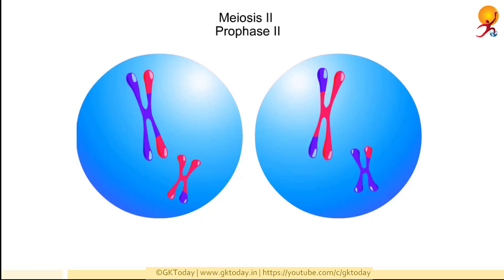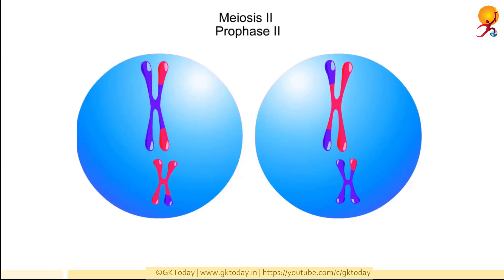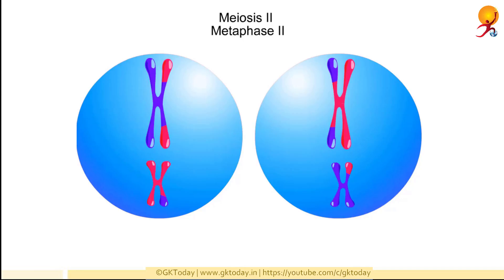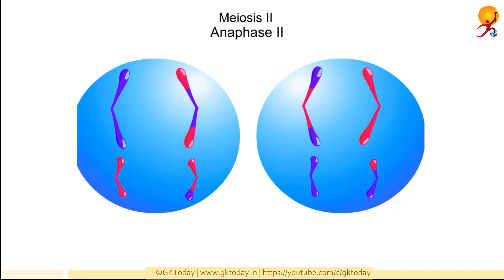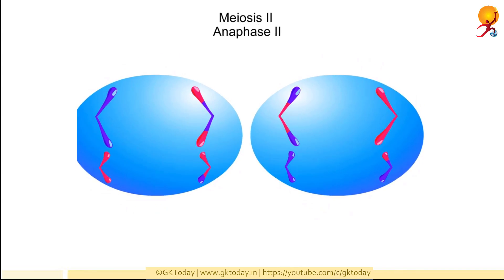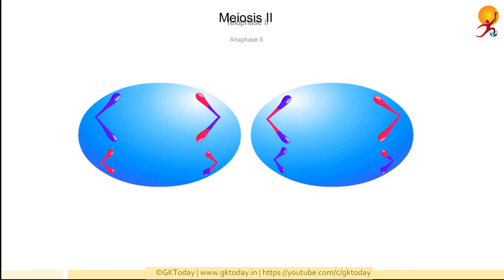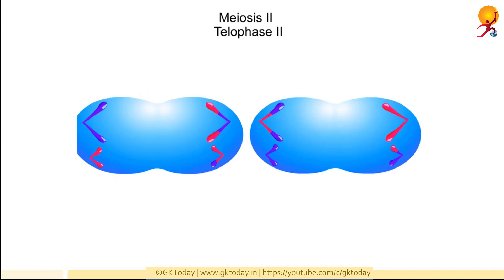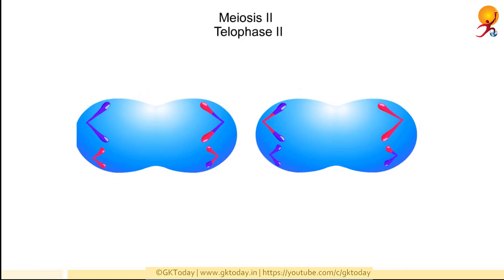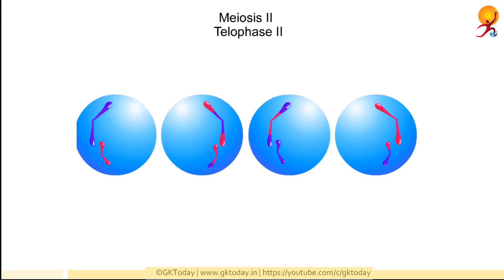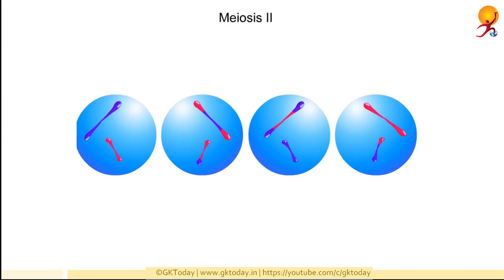The second major event of meiosis is meiosis 2, which strongly resembles mitosis. During prophase 2, duplicated chromosomes consisting of two sister chromatids begin to move to the middle. In metaphase 2, the chromosomes are arranged along the spindle's midplane. The sister chromatids begin to separate in anaphase 2, becoming independent chromosomes that move to opposite poles of the cell. During telophase 2, the chromosomes reach the pole. When meiosis 2 is complete, the cytoplasm of each cell divides to form two daughter cells. The four cells are haploid, each containing a single set of chromosomes. Note that the four daughter cells are all genetically different from one another.